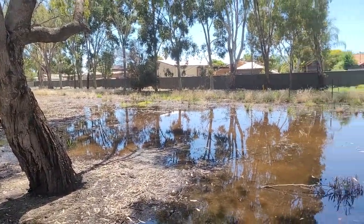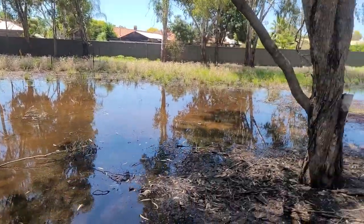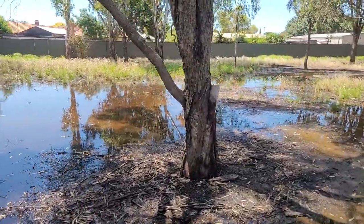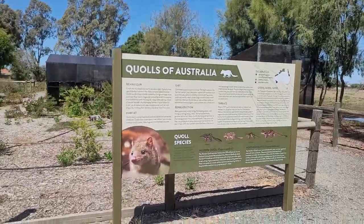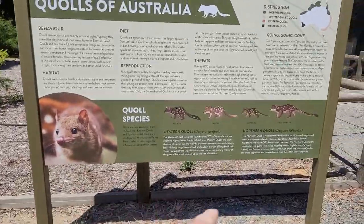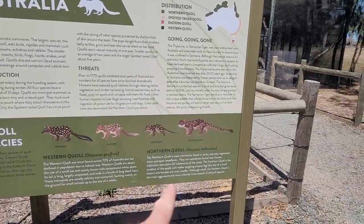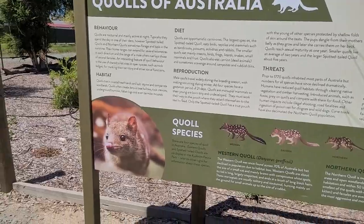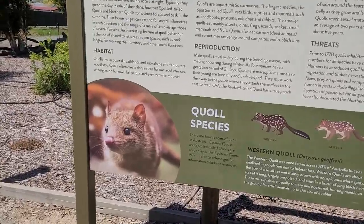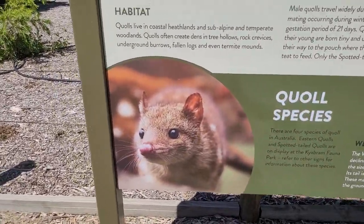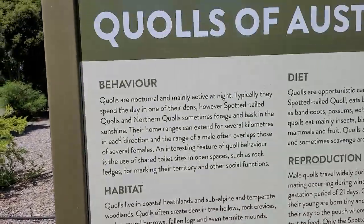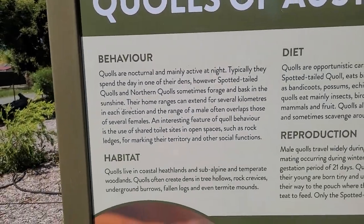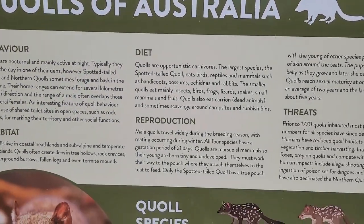This provides habitat for a lot of species, especially mosquitoes. This is one of my favorite animals — here we have quolls: Western, Eastern, Northern, and Spotted Tail. The Spotted Tail is the largest one. That looks so cute! Here we have behavior, habitat, diet, and reproduction.